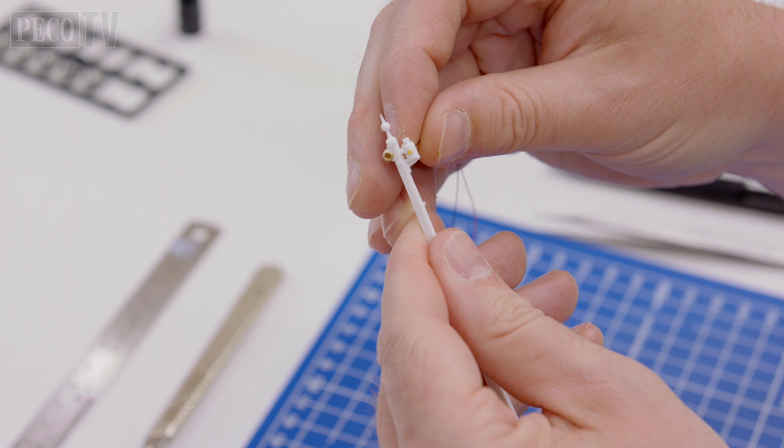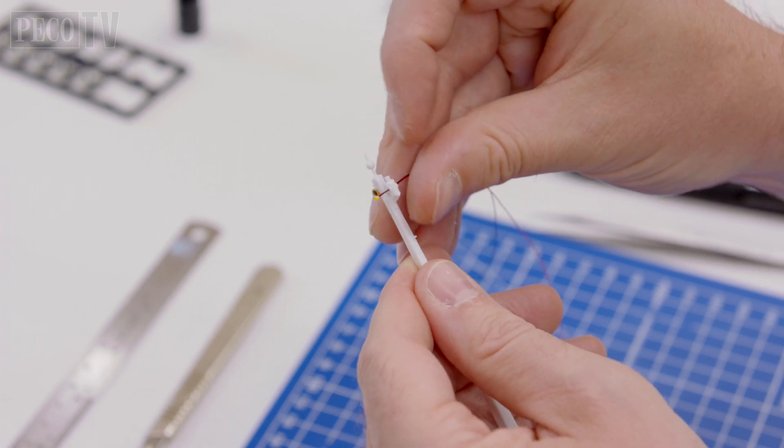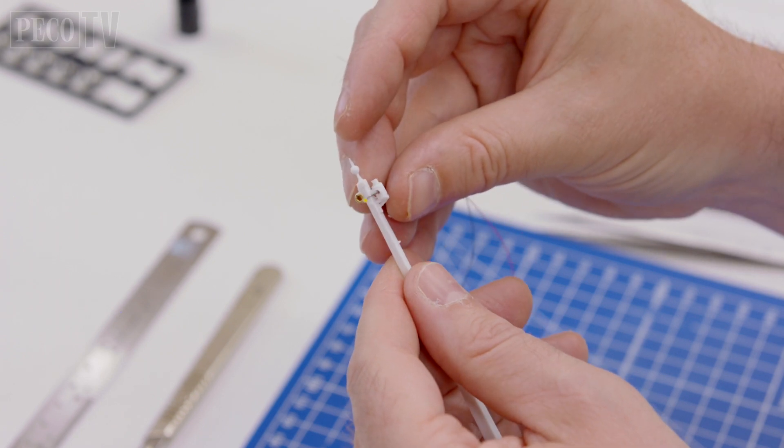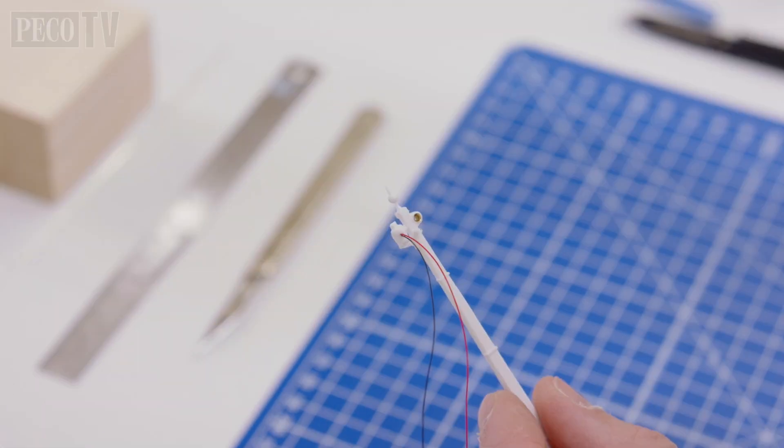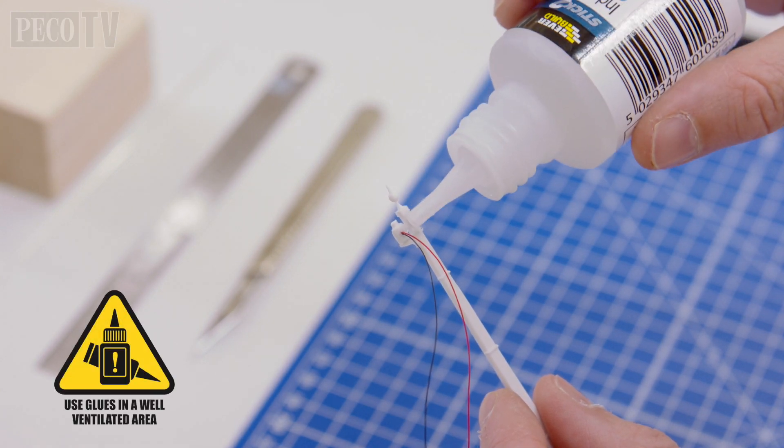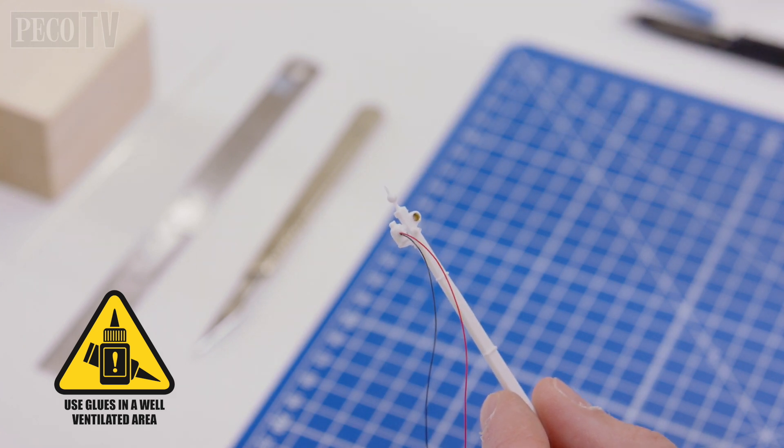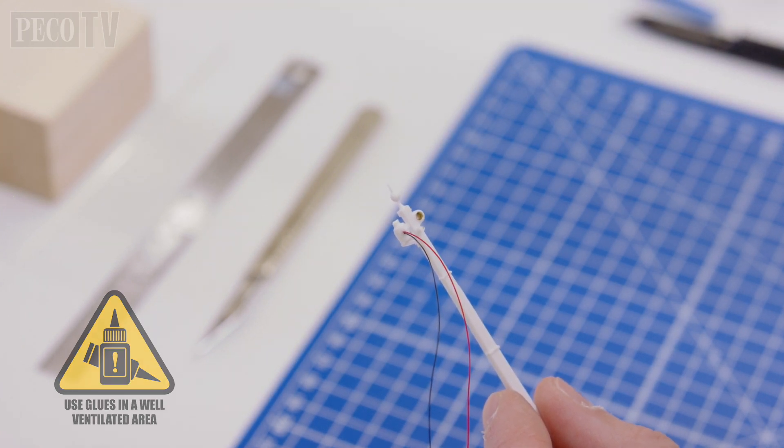Then, push your LED very gently through the back of the lamp, making sure the front of the LED is facing the correct direction, like this. Once the LED is in place, put a tiny blob of super glue on the back of the lamp and hold the LED wires in place.